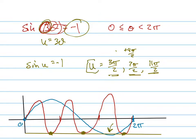Now, am I trying to solve for u or θ? Theta, right. So re-substitute 3θ in for that. Then divide by 3, and you get θ equals 3π over 2 times 1 third, which means the 3's cancel. You get π over 2, 7π over 6, and 11π over 6.